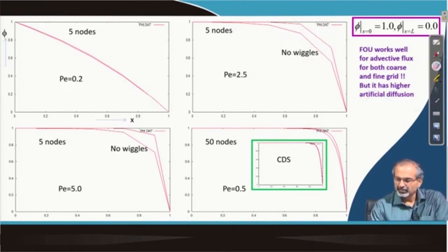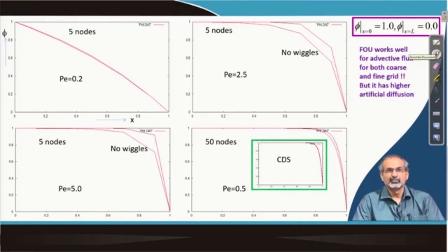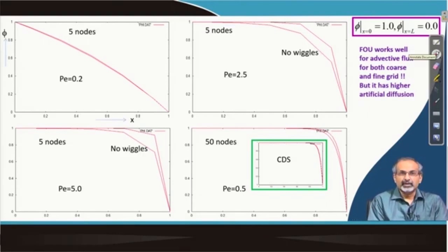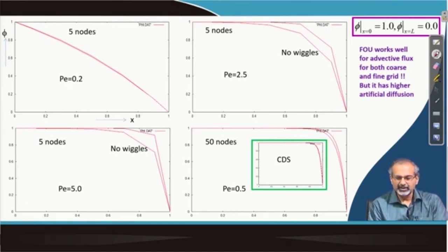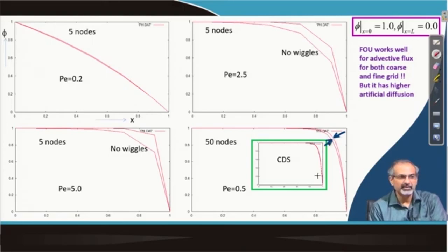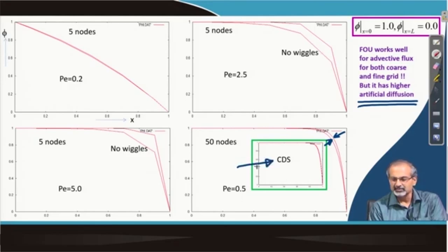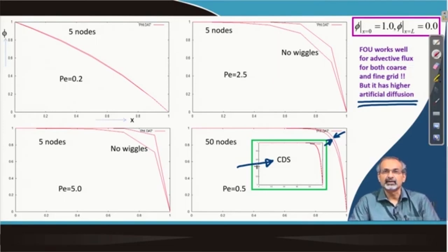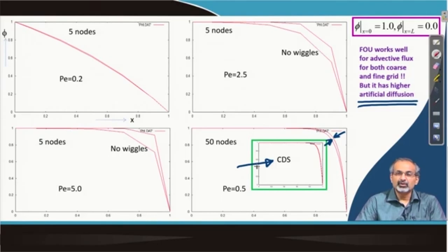With 50 nodes, there are still no wiggles — as expected — but even with a large number of nodes there remains a gap between the analytical and numerical solutions due to artificial diffusion. In contrast, as shown in the insert, the central differencing scheme with many nodes had virtually no gap between the analytical and numerical solutions, due to its superior formal accuracy and essentially no numerical diffusion.